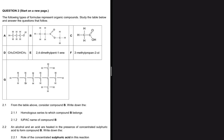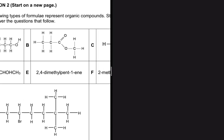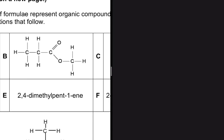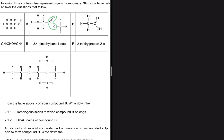Let's look at the homologous series to which compound B belongs. It will be easy to see that compound B is an ester because of this functional group that we have here. So the answer to 2.1.1 is that compound B is an ester.